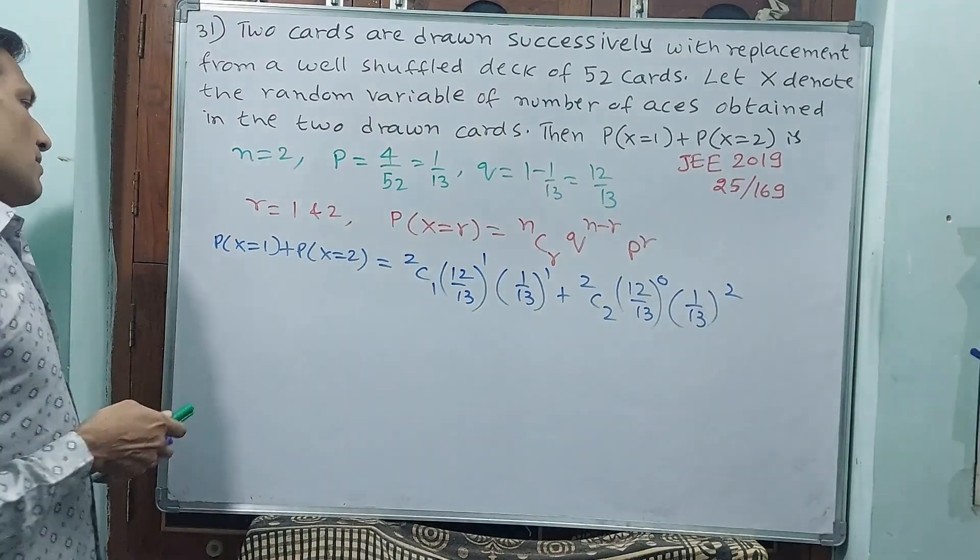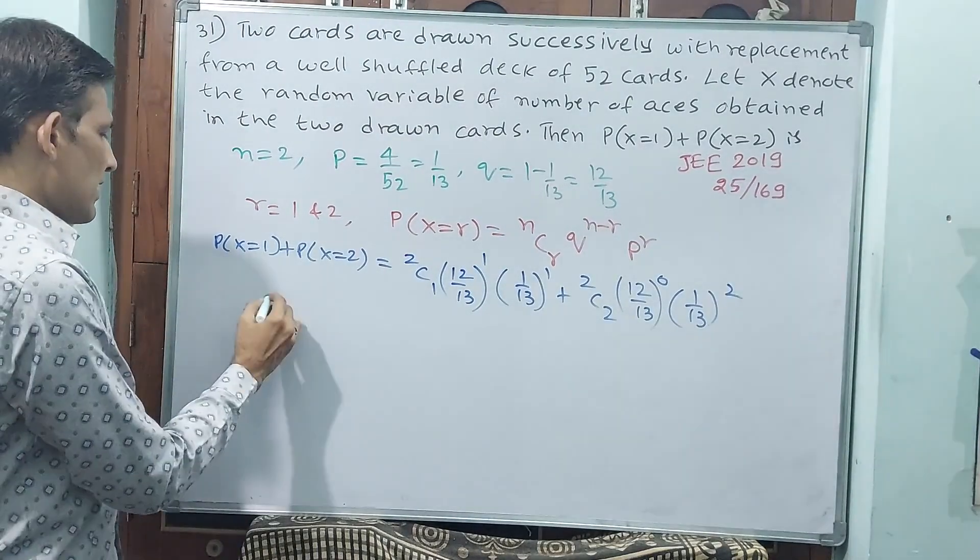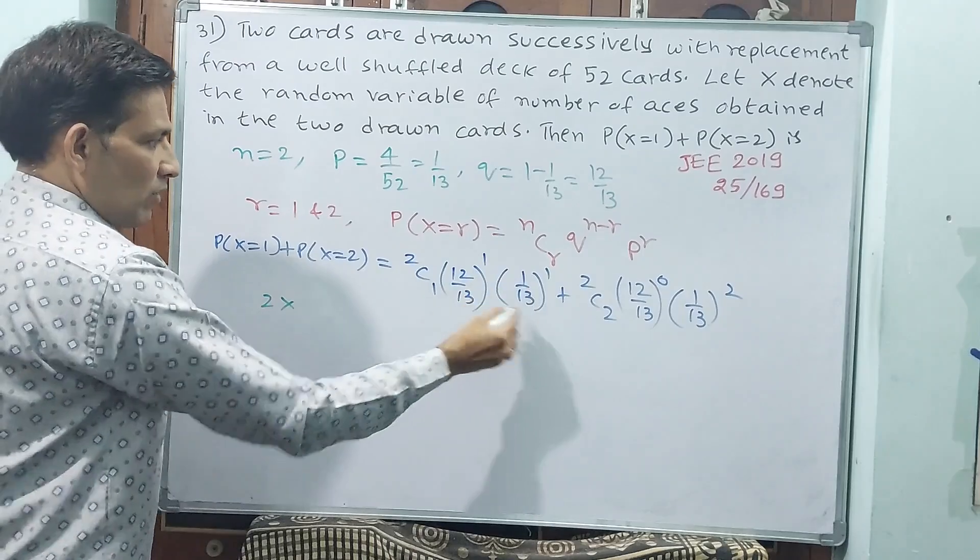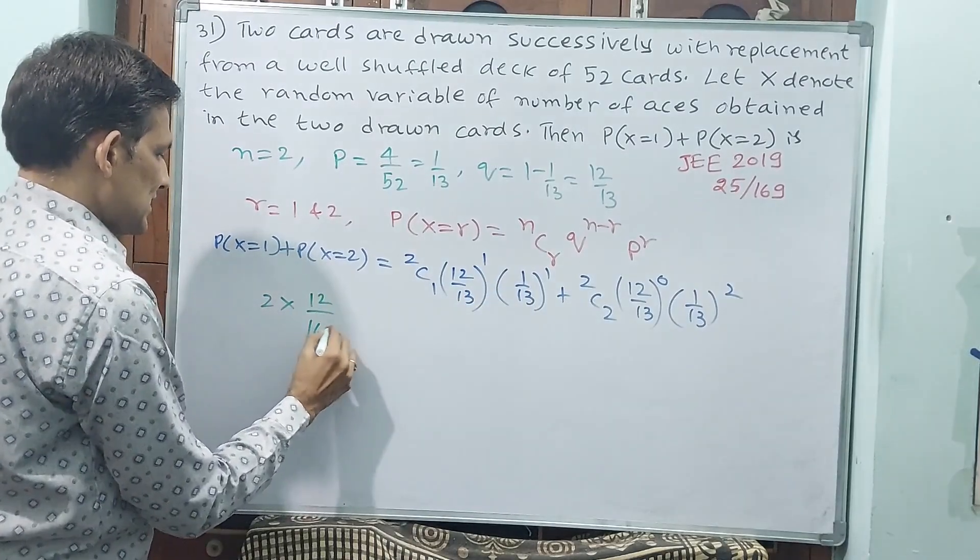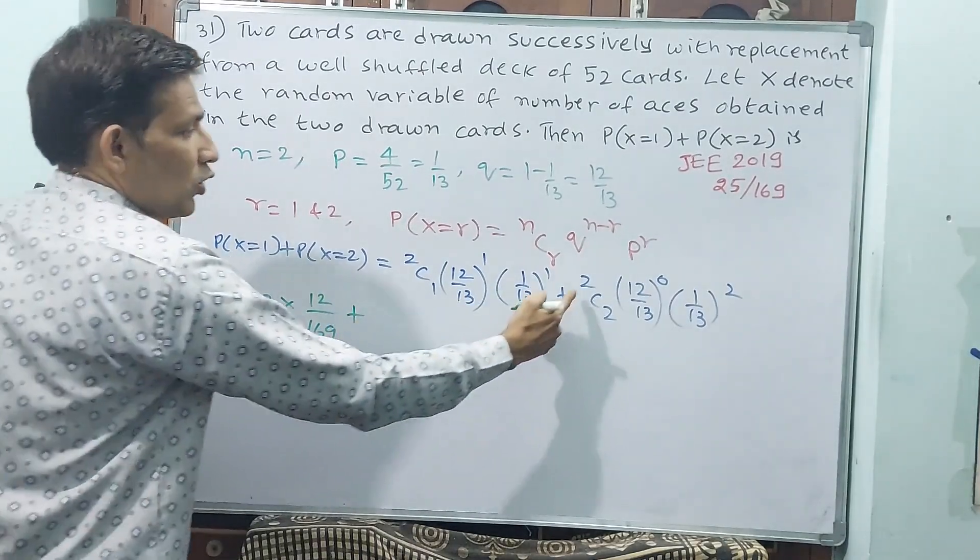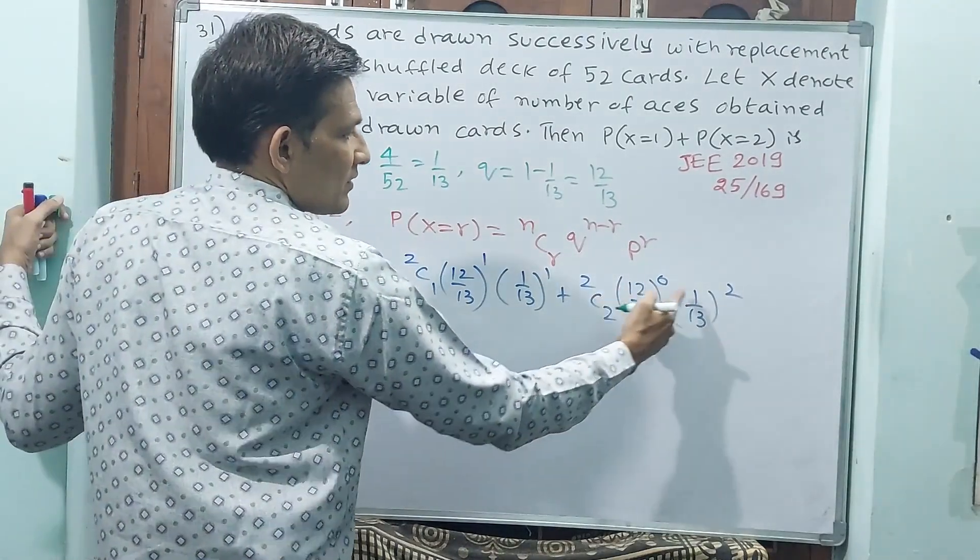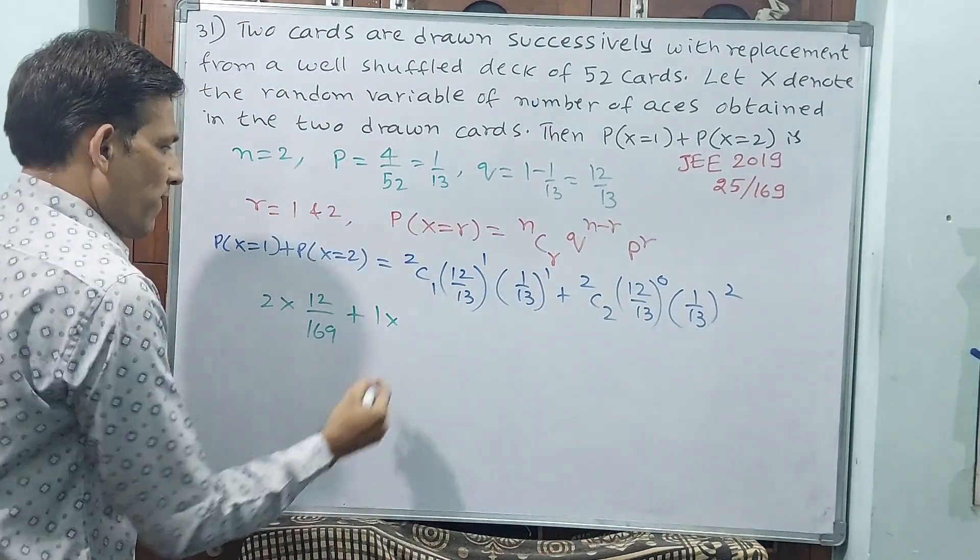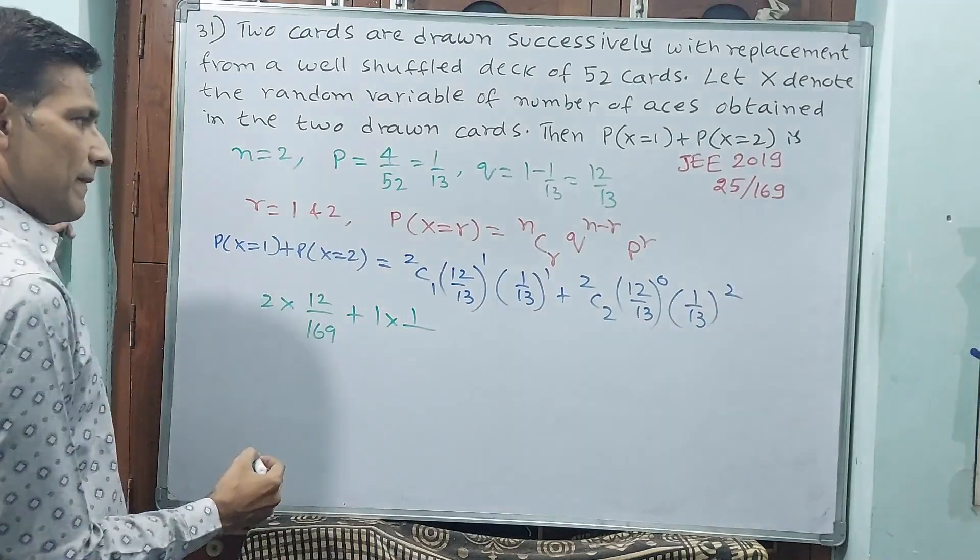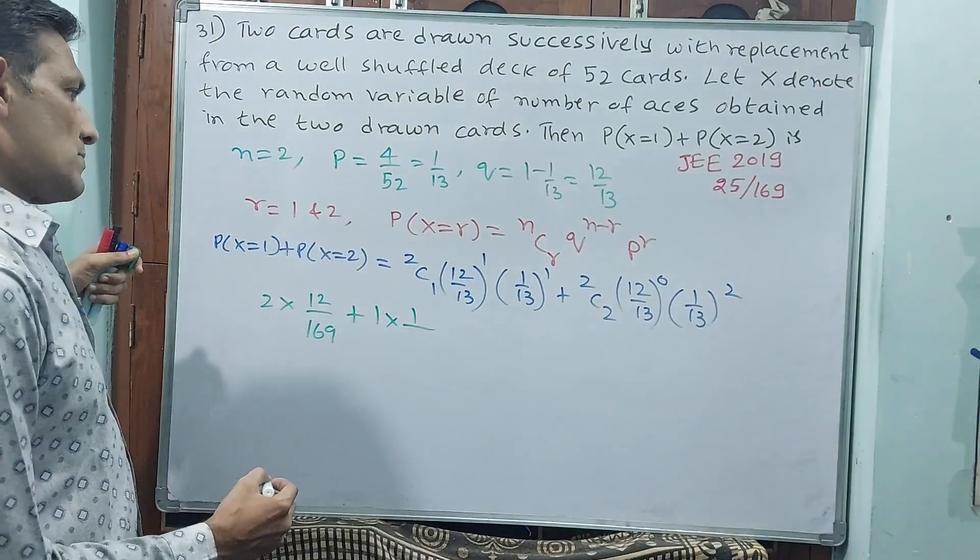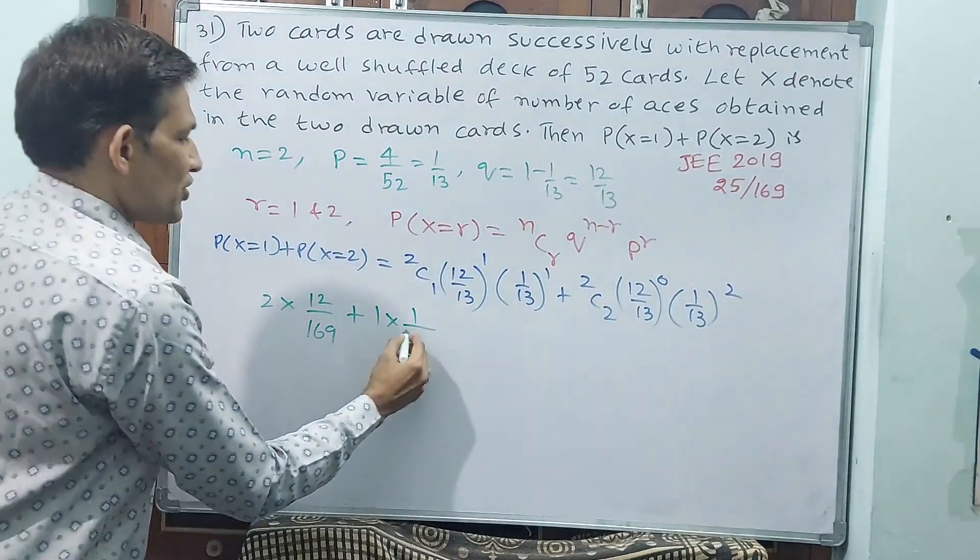Now, 2C1 value is 2 into 12 by 169. Plus, 2C2 value is 1 into, see this is 1, this is also 1, 1 by 169.